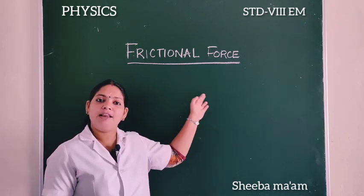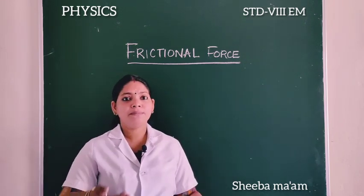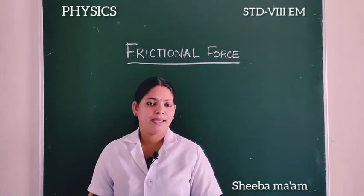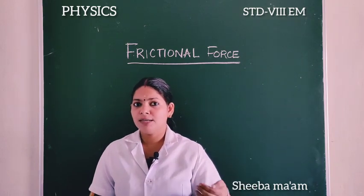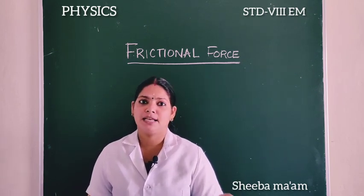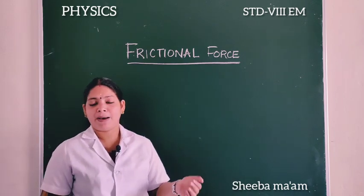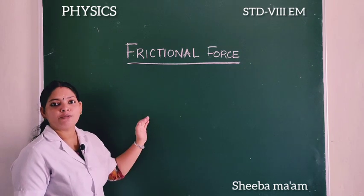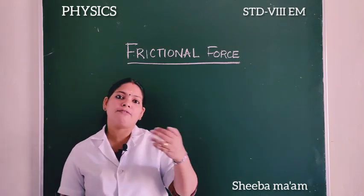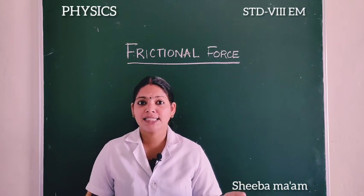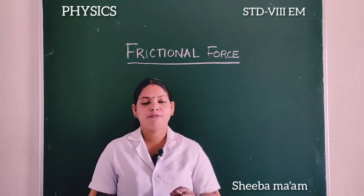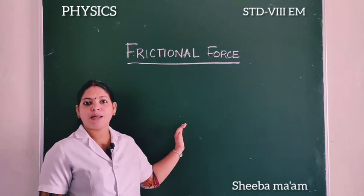This force is known as frictional force. How will you define frictional force? When an object moves over the surface of another object, a force acts parallel to the surface which opposes the relative motion of the object. This force is known as frictional force.